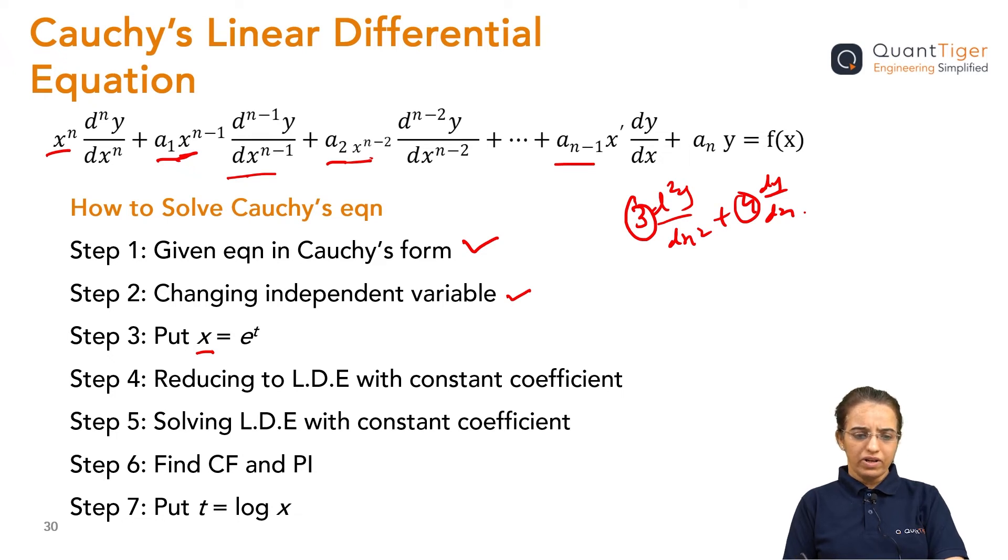For that x jo ki independent variable hai yaha par, uske liye hum substitution karayenge which is x e raise to power t. Once you do this substitution, then whatever the equation we will be getting that will be after releasing we will getting linear differential equation that will be having some constant coefficient. Jo matlab jo hummin abhi tak jo equations, just type k equation liye linear differential higher order equations diekhe ushi type pe wo convert ho jayega after doing the substitution x is equal to e to the power t.